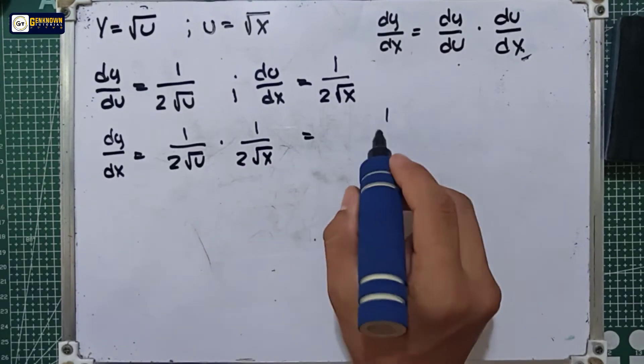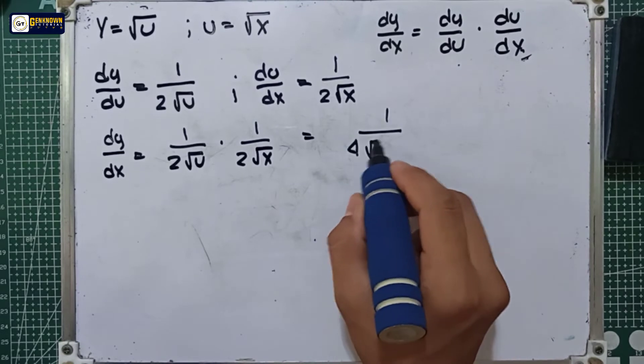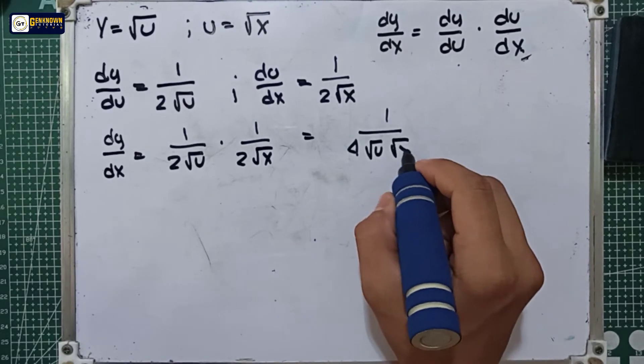What we will do is combine these two equations. So that is equal to 1 over 4, square root of u, multiplied by square root of x.